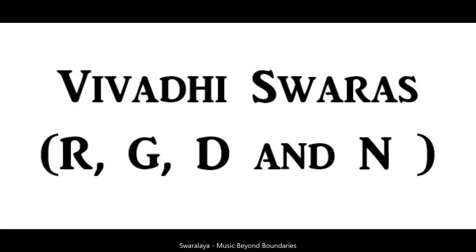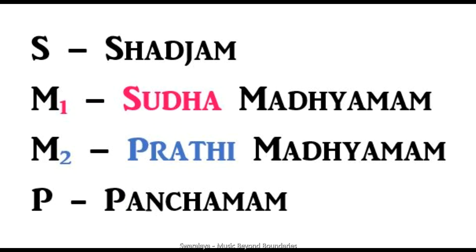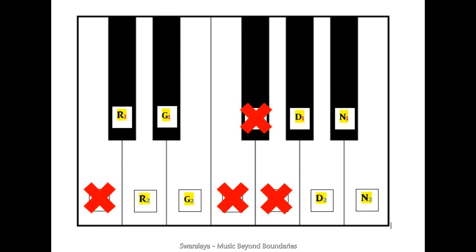As you all know, Sa and Pa show no change in their frequencies and they don't take part in Vivadi Swaras. If you have seen the second part of this video series, you will also count Madhyamam, as there are no further classifications of Ma. So Shajam, Shuddha Madhyamam, Prati Madhyamam, and Panchamam — that is Sa, Ma 1, Ma 2, and Pa — are fixed. These four sounds are not given any other names.